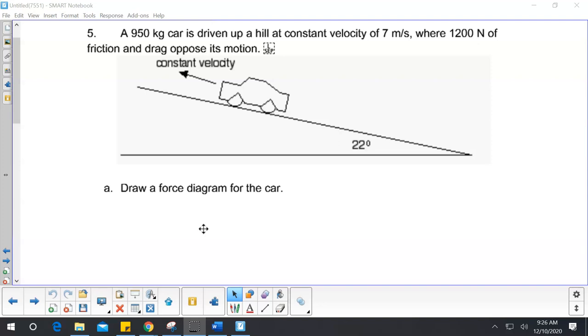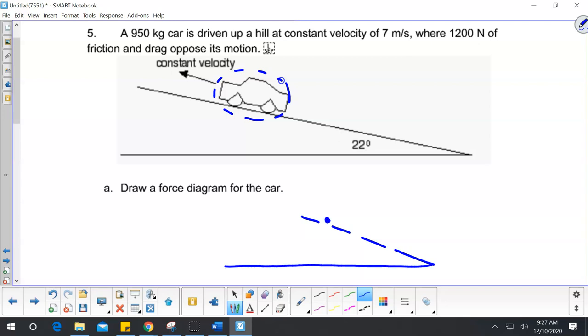So if we look at this, our force diagram of this car would be... We're looking at the car, and we are on a slope. So we'll draw a dashed line. So here's my car. I know I have force gravity, which is down. I know I have a force normal, which is perpendicular to the surface. It's right here.